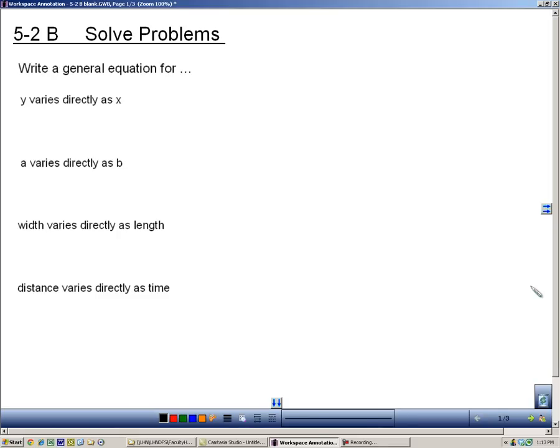Section 5.2b is about solving problems, specifically problems that are created as a direct variation. We're going to look at each one of these general equations and write them. Y varies directly as x. Well, that one is just going to be y equals kx, because we've said that when you see this word varies directly, it looks like this.